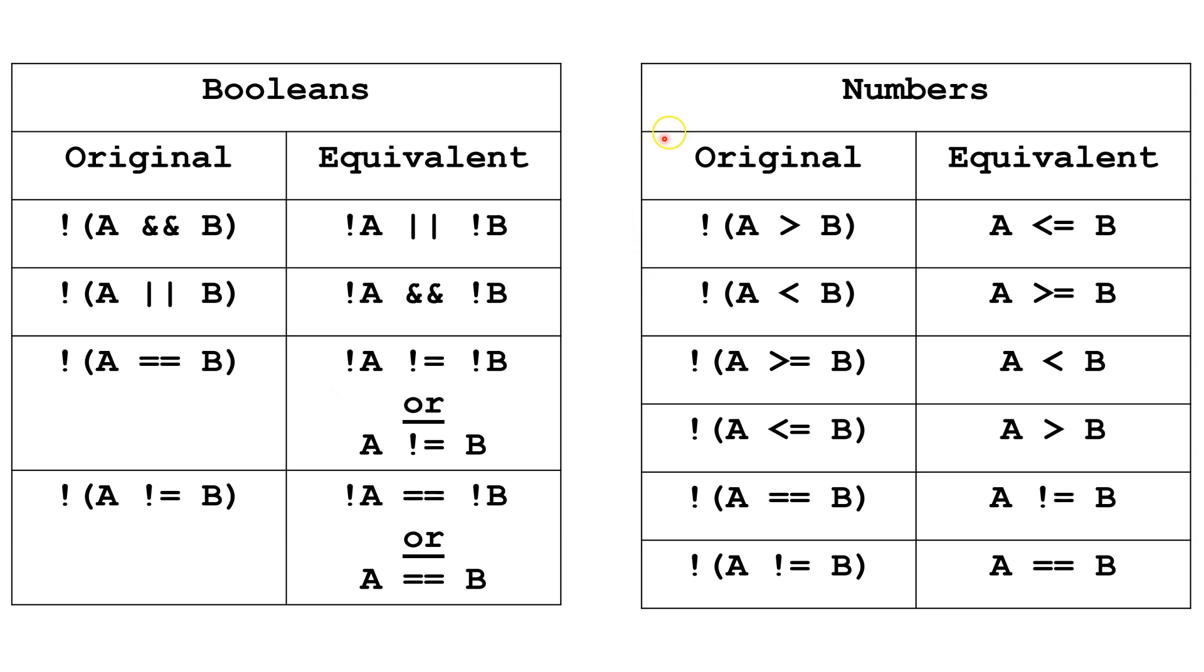Now, A and B could be numbers instead of being Boolean values. Here we have Not A is greater than B. We can't reverse a number. So here what we do is reverse the sign. A common mistake people make is they think the opposite of greater than is less than, but the opposite of greater than is less than or equal to. Also, the opposite of greater than or equal to is just less than.